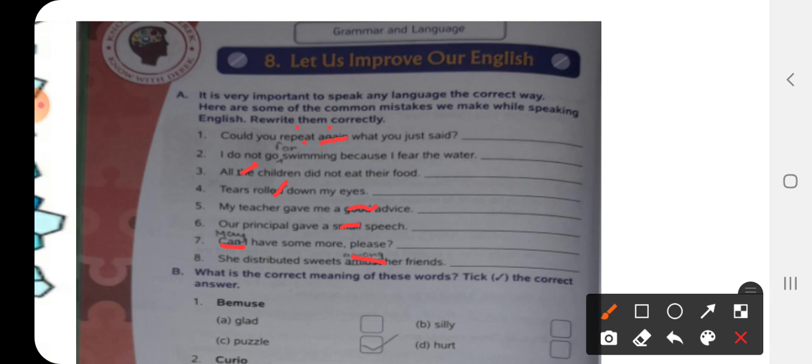We will omit amidst and we will write among. The sentence will be she distributed sweets among her friends. A-M-O-N-G.